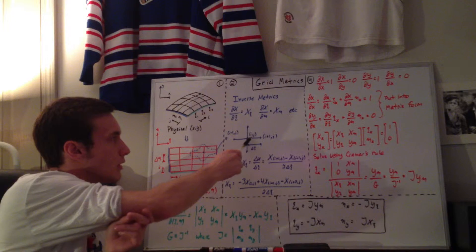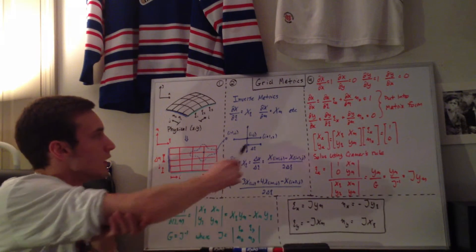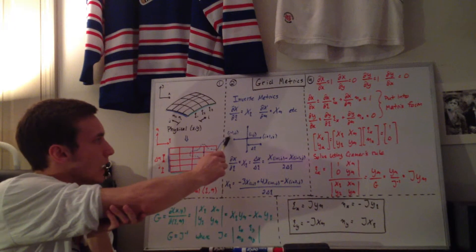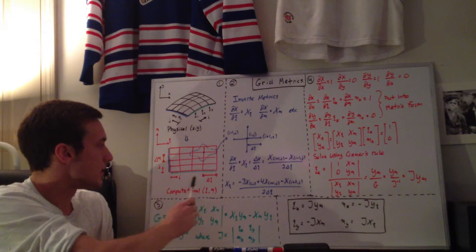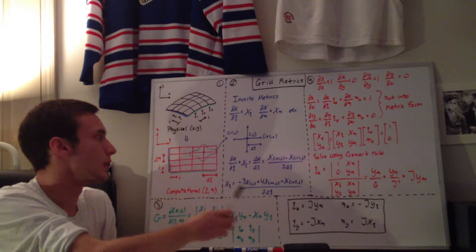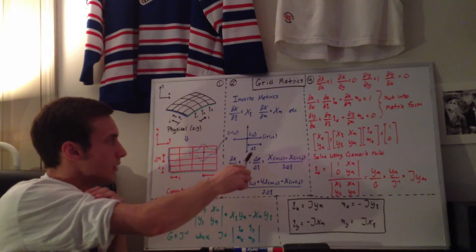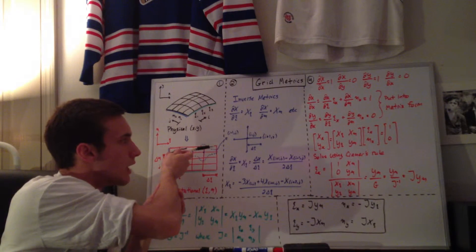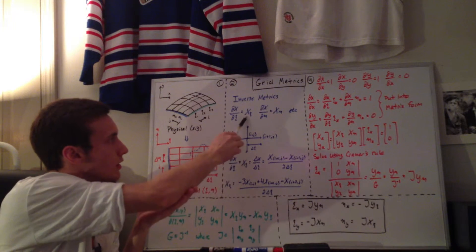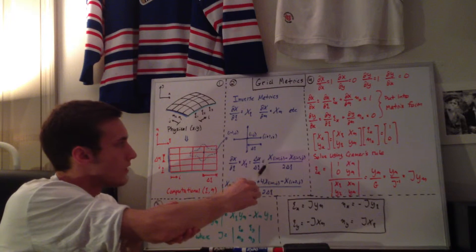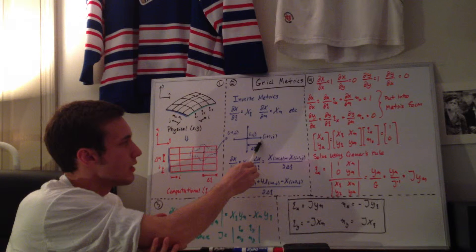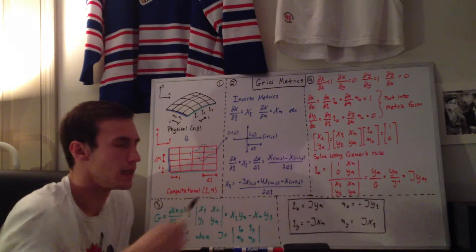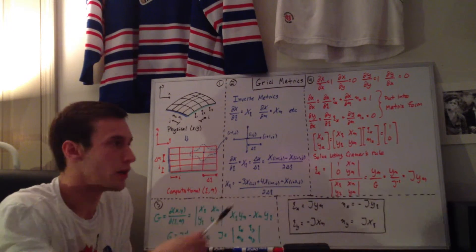We're going to call this middle point i,j. The next point over in the x-direction (which is the i-direction) is i+1,j, and in the negative x-direction it's i-1,j. Since we're in the computational domain, the spacing in the zeta or i-direction is delta zeta. Using a second-order central difference to find dx/dz — which is x sub z — that equals (x at i+1,j minus x at i-1,j) all over 2·delta-zeta, and since delta zeta equals one, the denominator is just two.